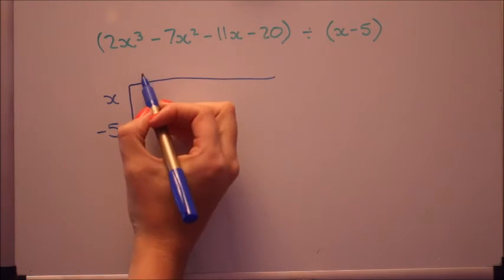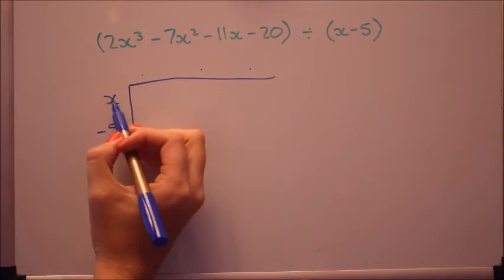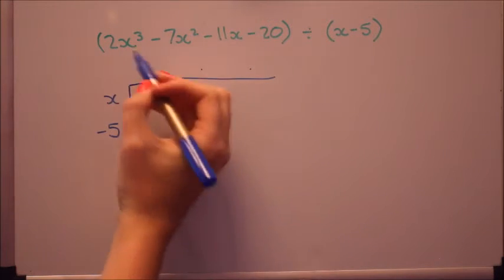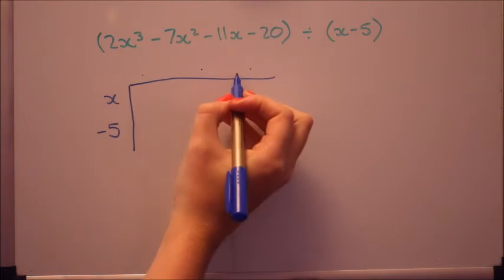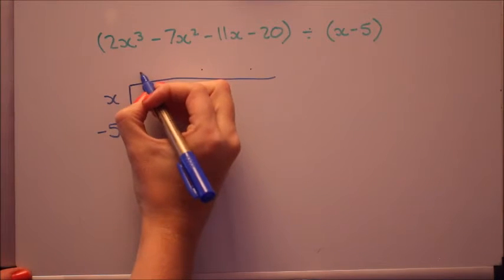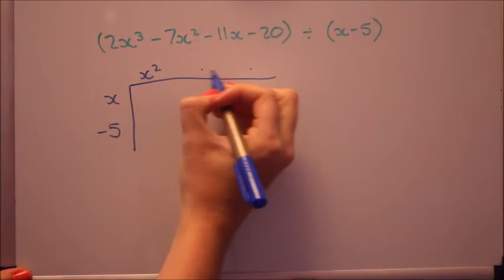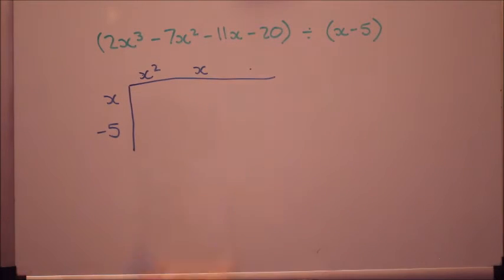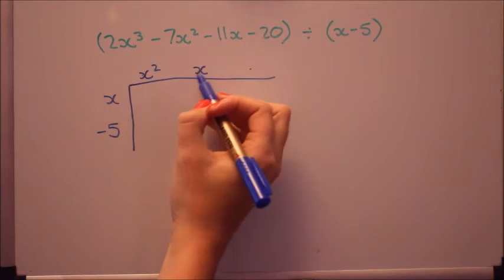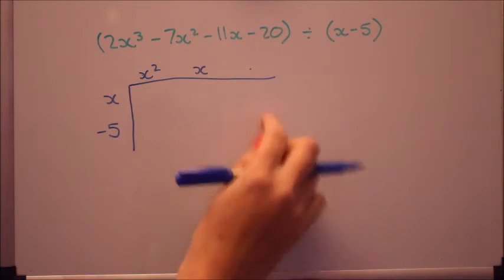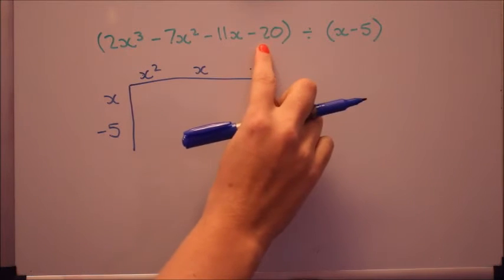Now on the top we're looking for the things that multiply by these to give us the answer. So we don't know what goes up here yet but we're going to have an x squared term, an x term and a number term. Now when we multiply this as a grid we'll get the answers that simplify to give us what we started with.